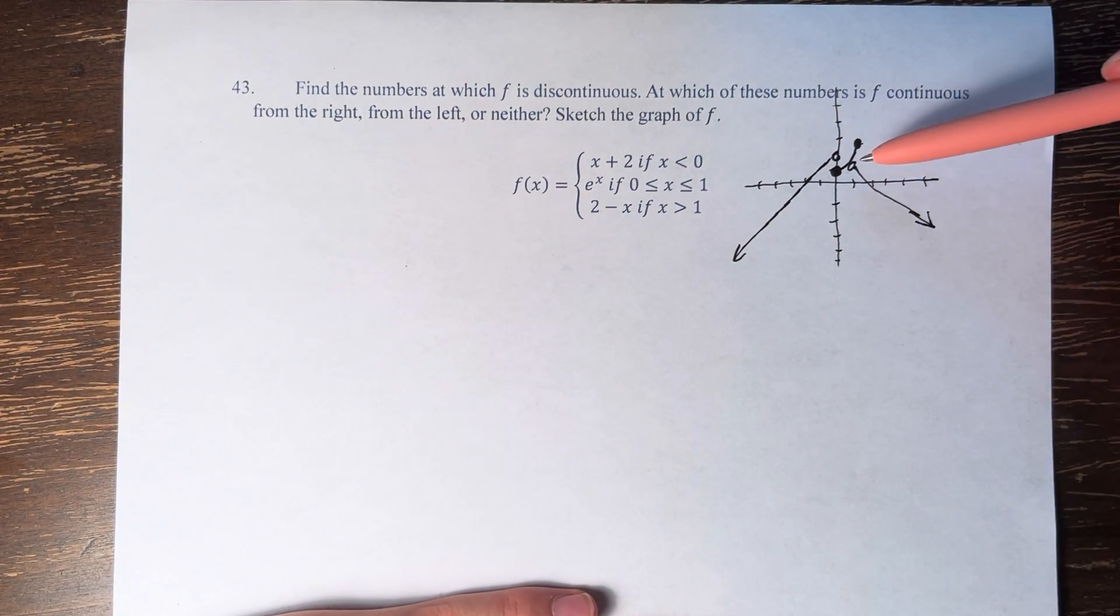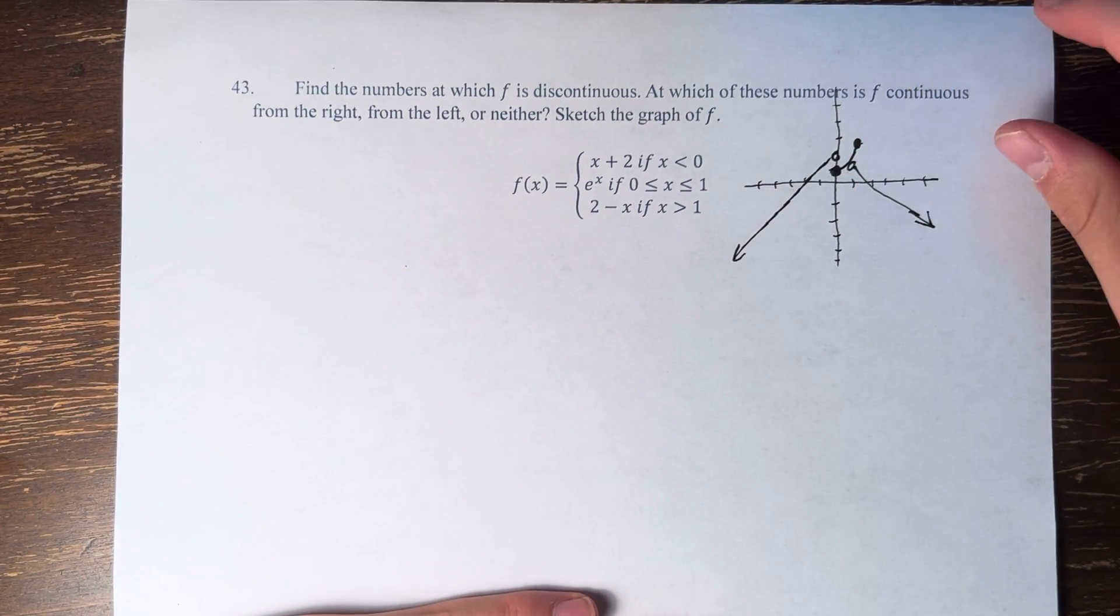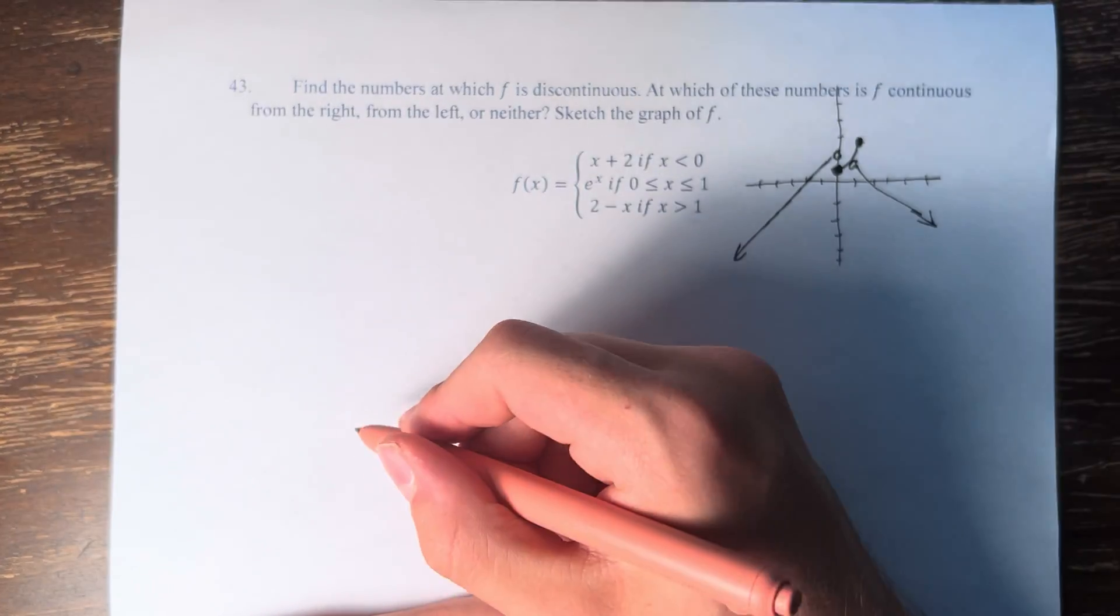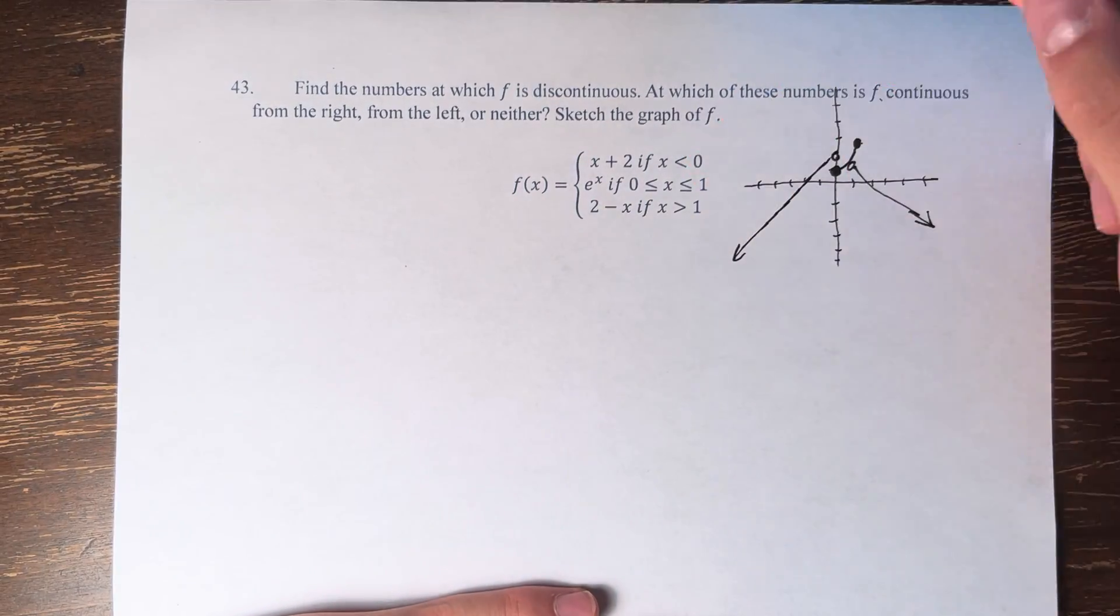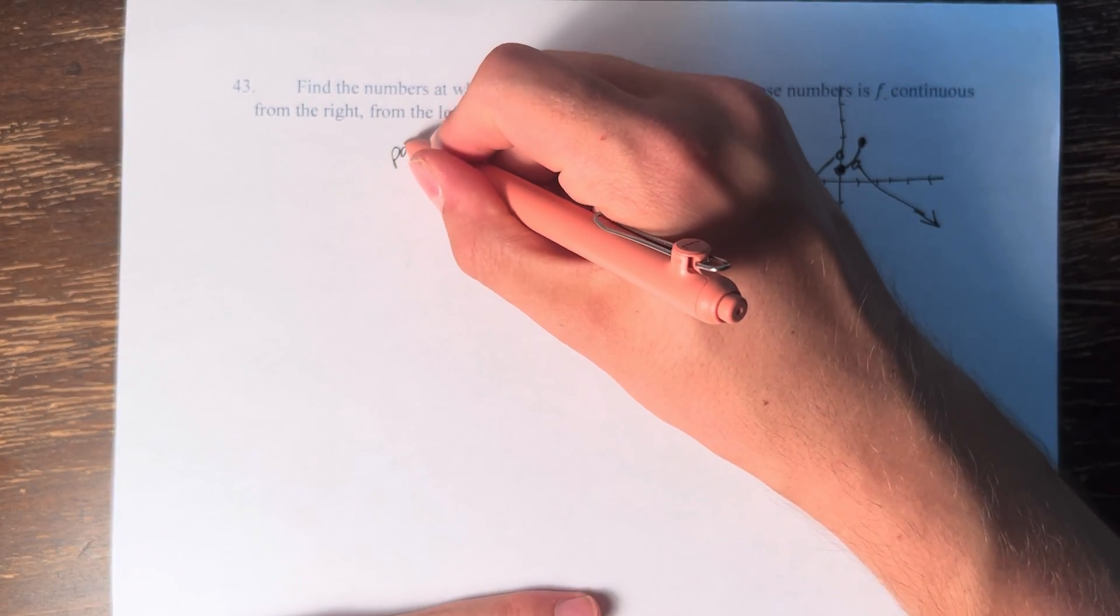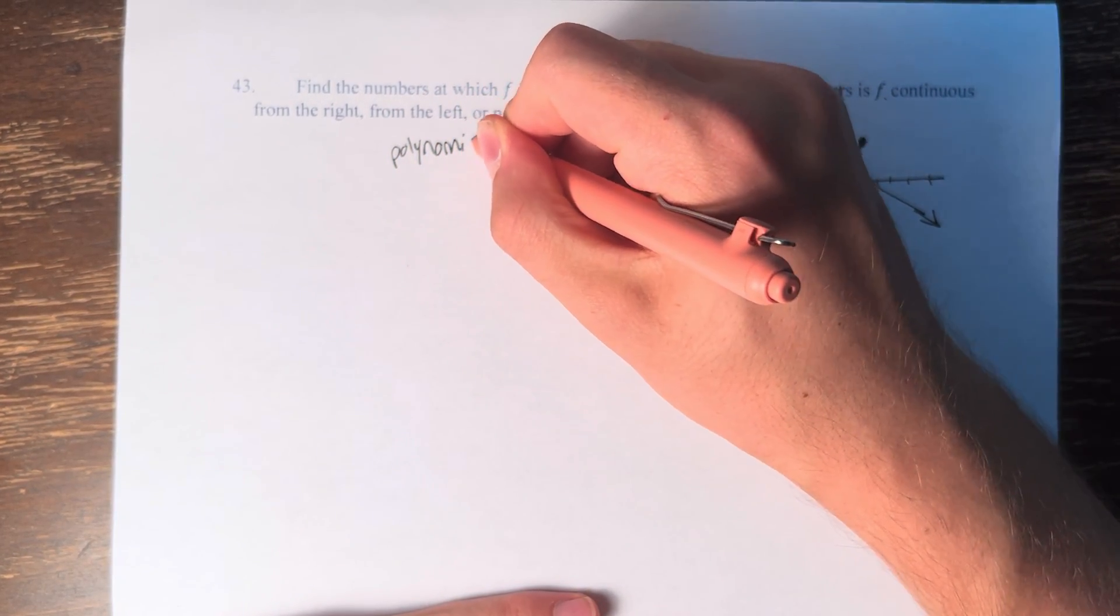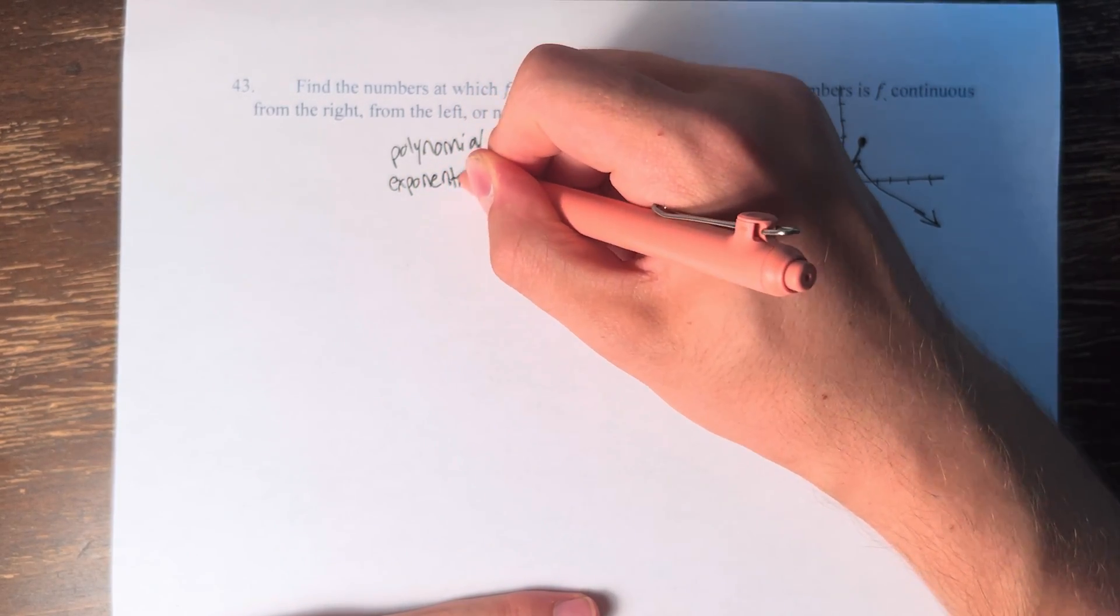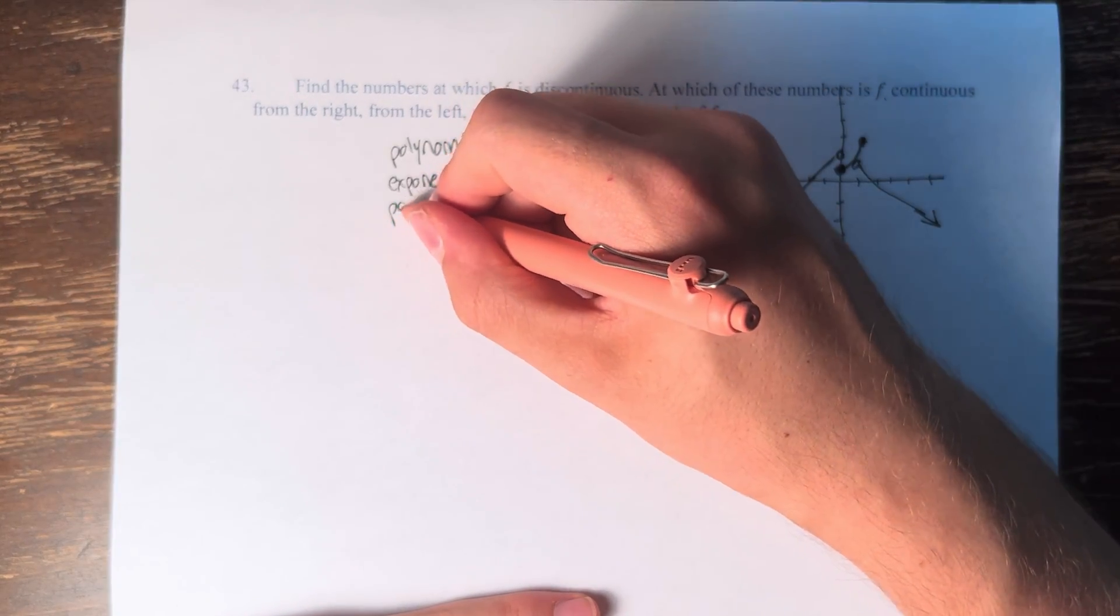And so we can expect two discontinuities here. At 0 and 1, the function is discontinuous either from the right or the left. We'll get into that. So we're checking 0 and 1 because we can see that we have x plus 2 is a polynomial. E to the x is an exponential. And 2 minus x is a polynomial.